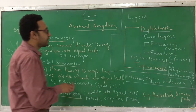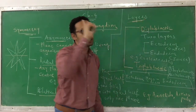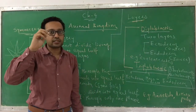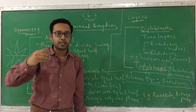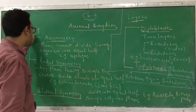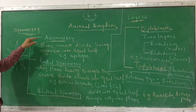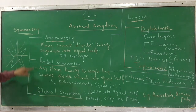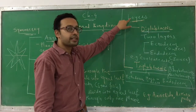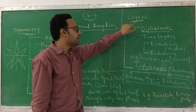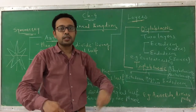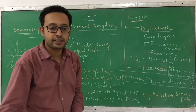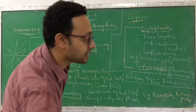This is the third criteria. The first is level of organization — cellular, tissue, organ, organ system. The second is symmetry — three kinds: asymmetry, radial symmetry, bilateral symmetry. The third criteria is the layers — diploblastic and triploblastic. Now we are moving ahead with another criteria for classification.